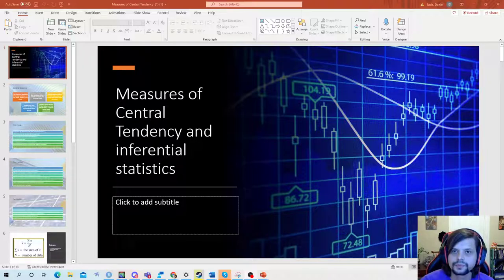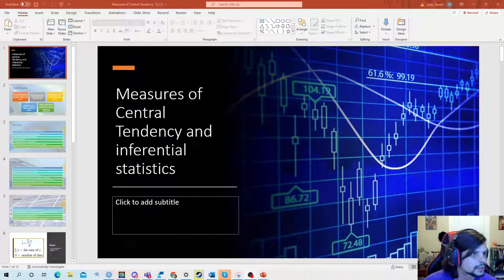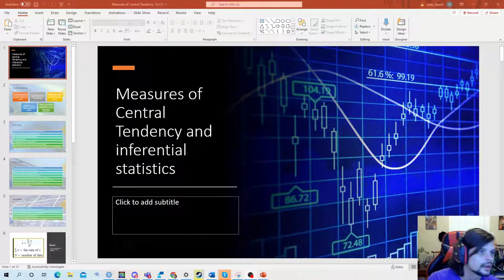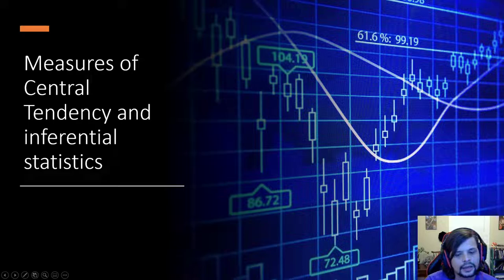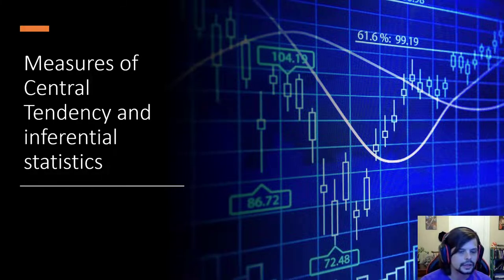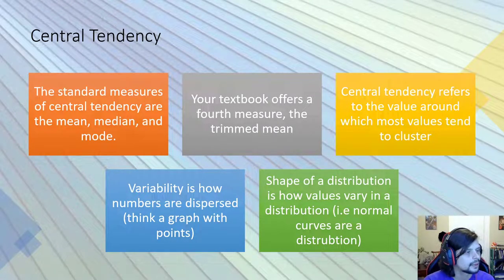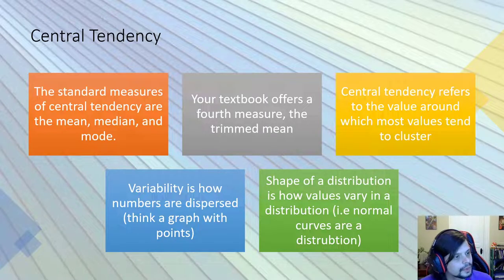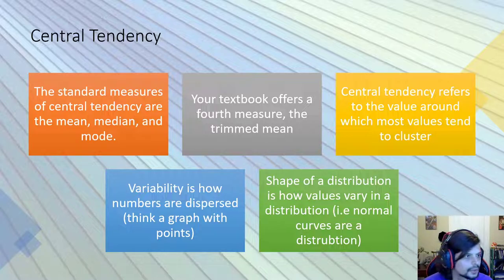Let's get started with the course and the first lecture. One of the things I want to go over is measures of central tendency — that is essentially the mean, the median, and the mode. Your textbook does offer a fourth measure which is the trimmed mean, but central tendency refers to the value around which most values tend to cluster.